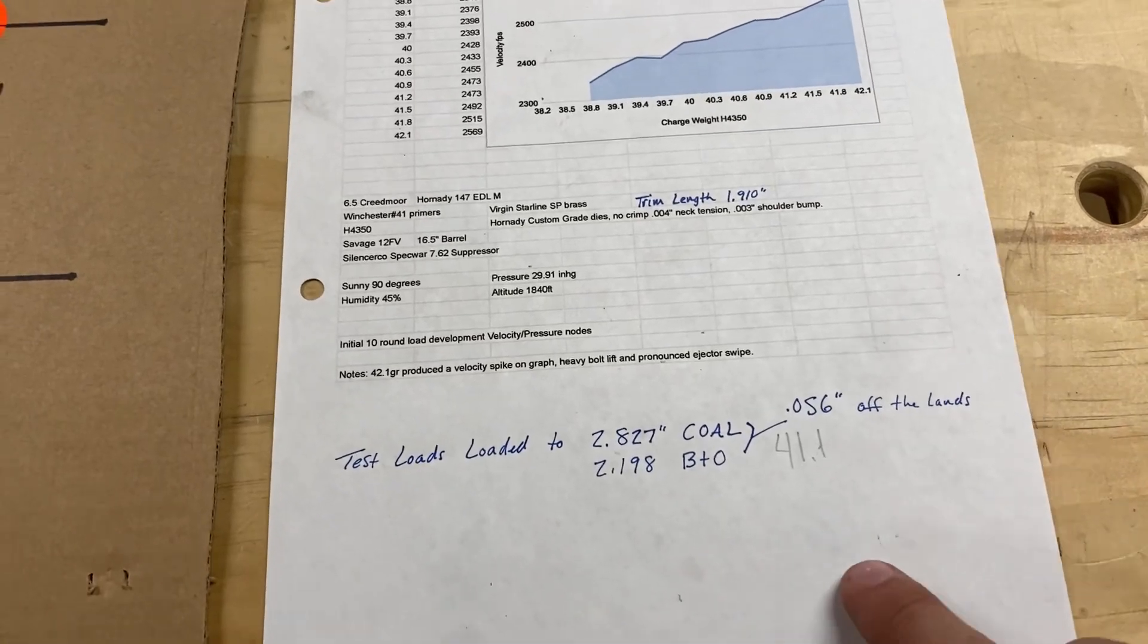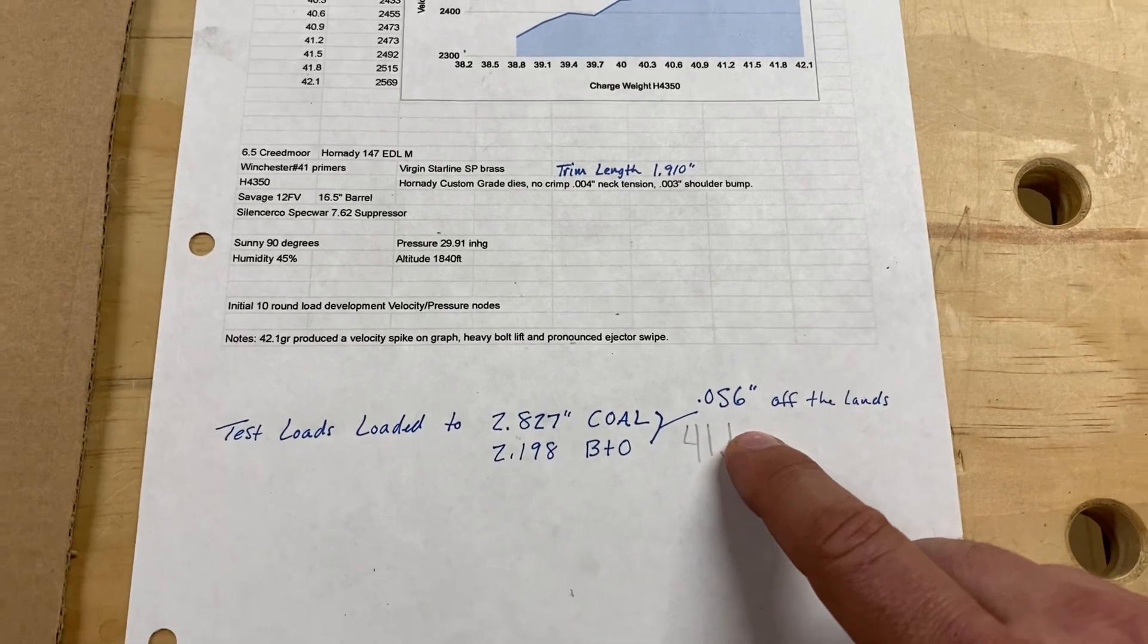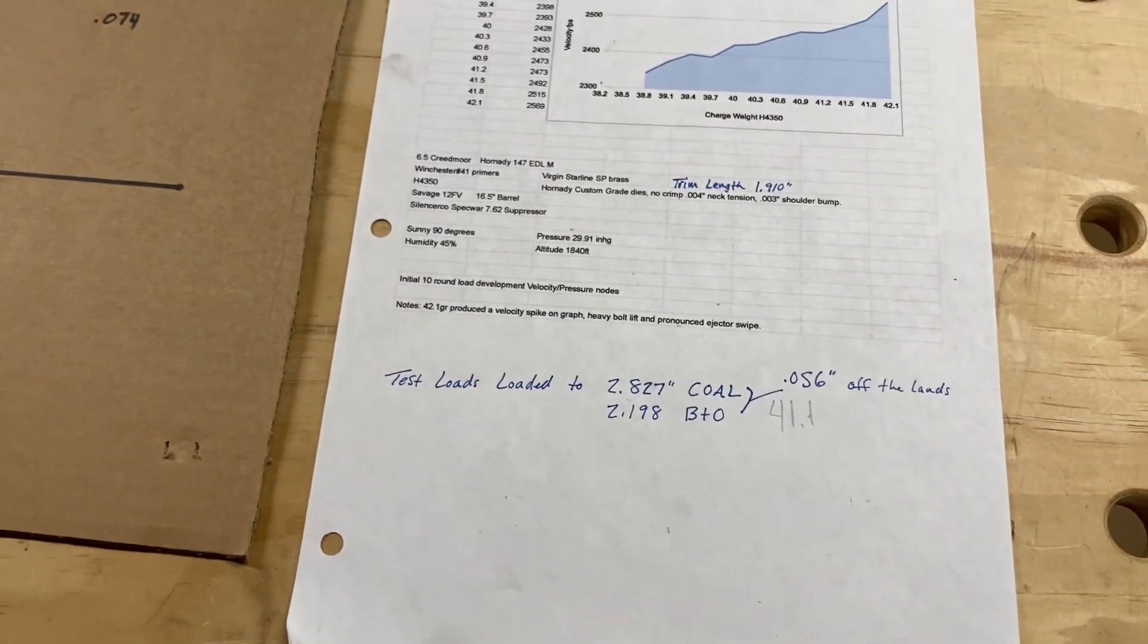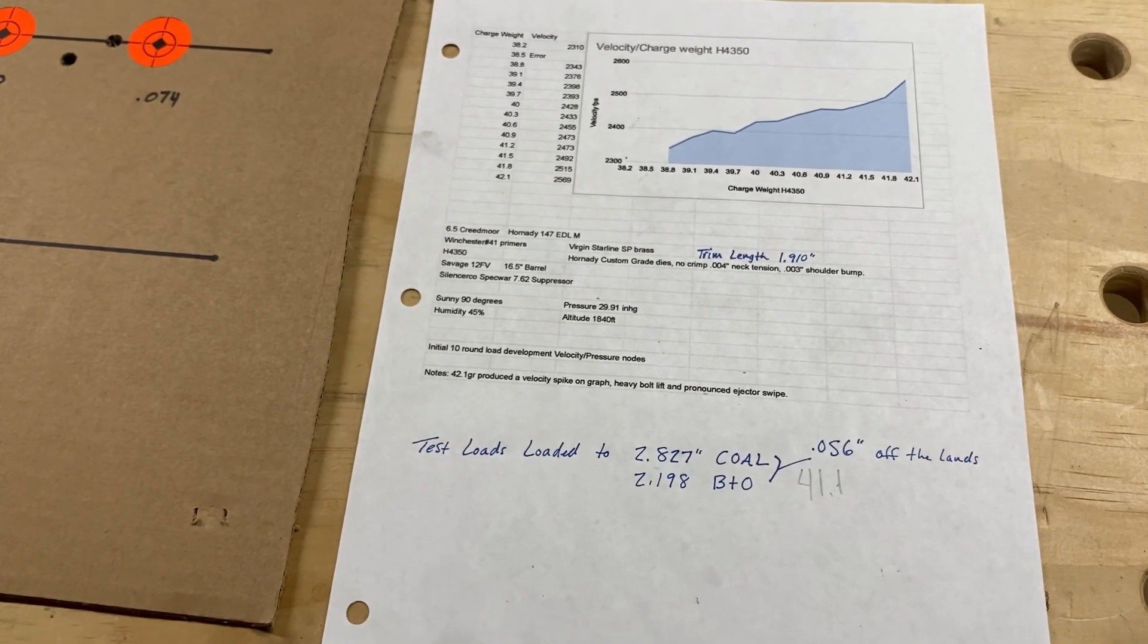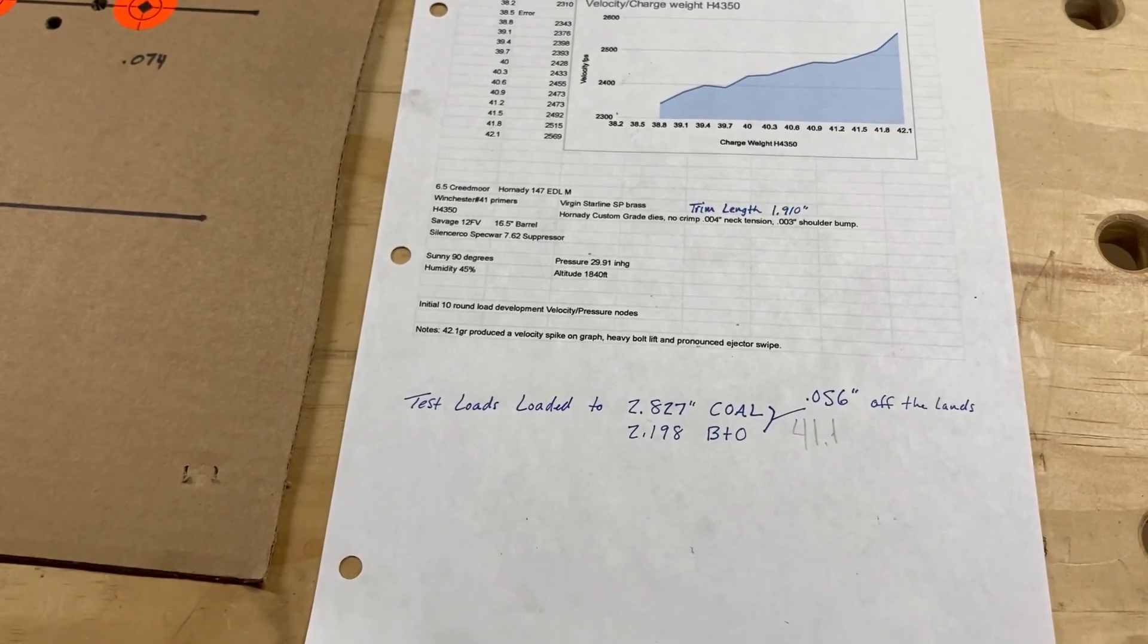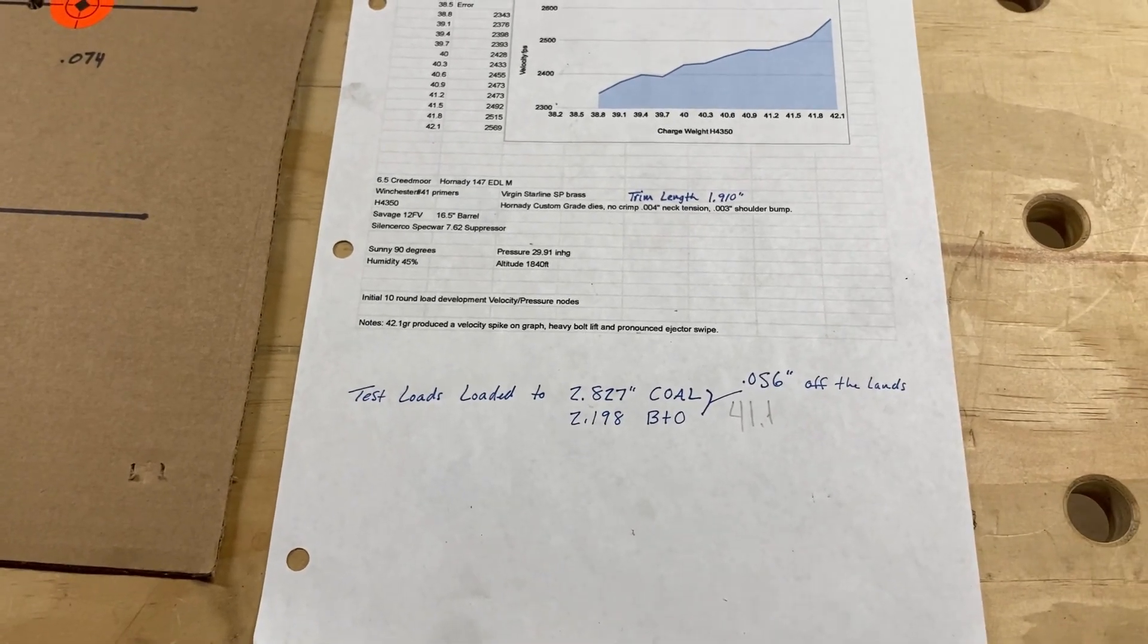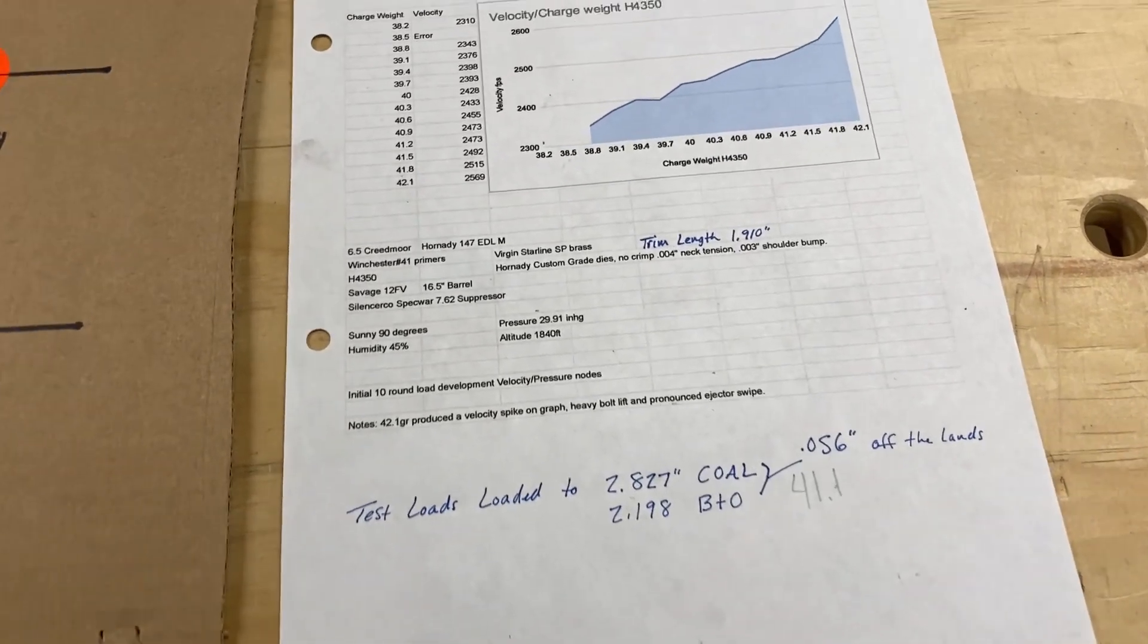And you can see the test loads. I did at 56 thousandths off the lands. That's what part of the ELDX or the ELDX Precision Hunter is off the lands and it shoots pretty good out of this rifle. So I decided to shoot those at that distance off the lands.